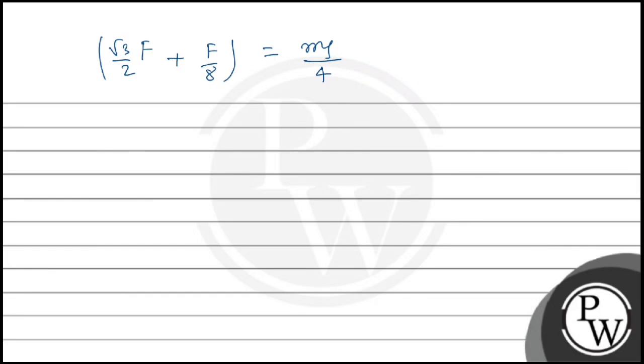Taking F common, we can write the value as mg/4 times (√3/2 + 1/8).